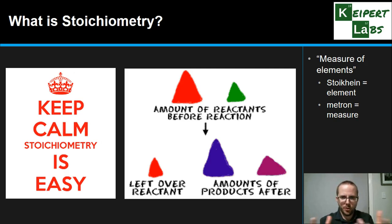This literally translates roughly to mean the measure of elements. Stoichion means element, metron - like metric and all those sorts of things - is to measure. So the measure of elements.